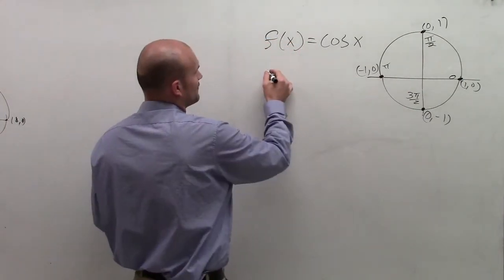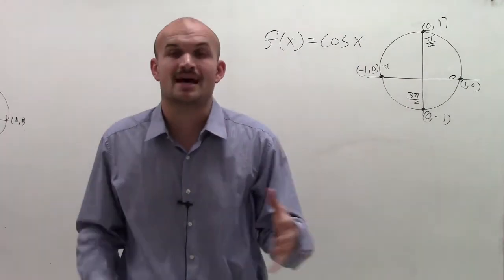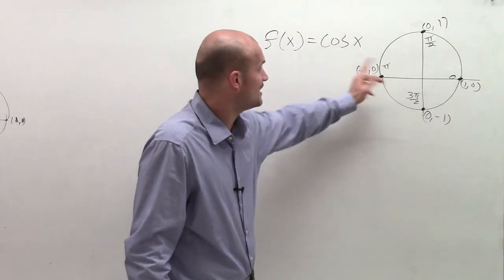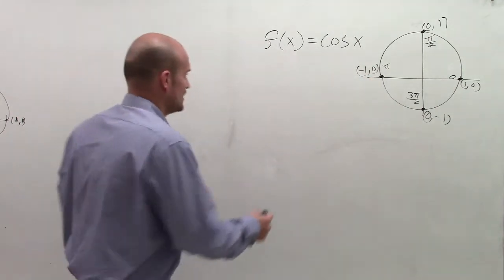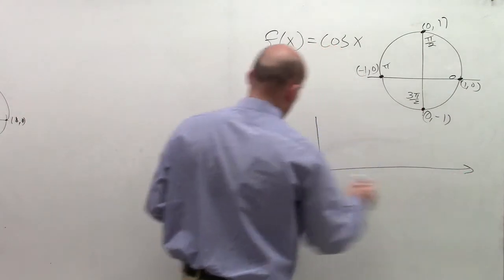So remember, if I wanted to figure out what was the cosine of π, remember that represents the x value on the unit circle. So the cosine of π is negative 1. So let's see what that would look like on a standard graph.